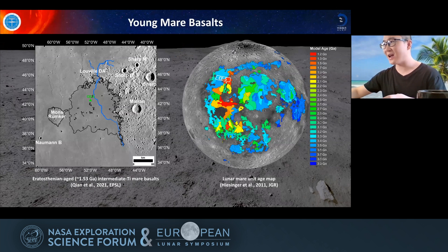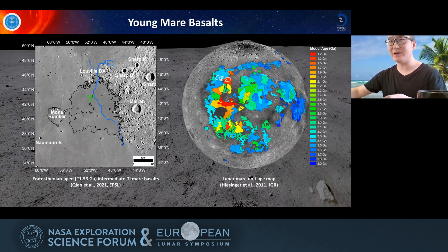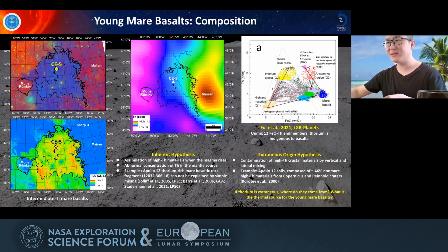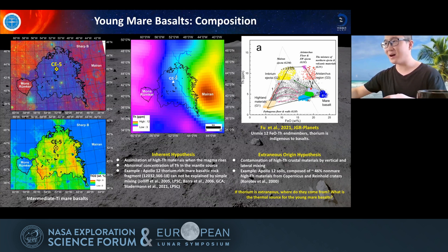If you look at Harry Hiesinger's lunar mare age unit map, you will find that the Chang'e-5 landing unit is one of the youngest lunar mare basalts on the moon, and this makes the Chang'e-5 mission very significant. Based on composition data from WAC and Lunar Prospector images, we found that this unit is a type of intermediate-titanium mare basalt.